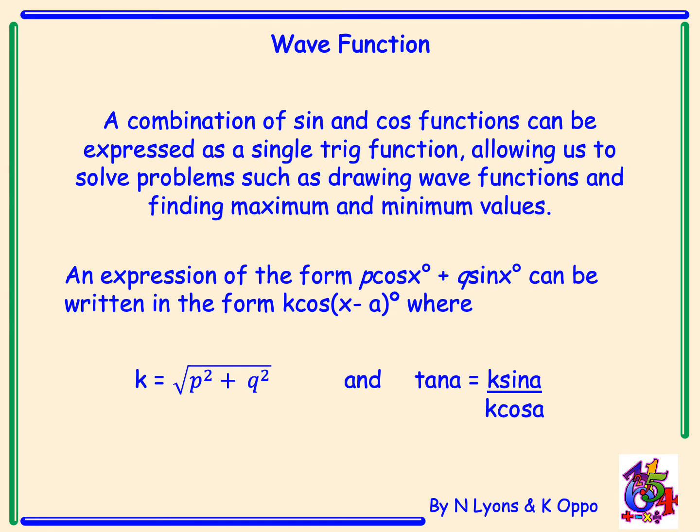An expression of the form p cos x plus q sin x can be written in the form k cos of x minus a, where we can find k by taking the square root of p squared plus q squared, and we can find the missing angle a by using tan a equal to k sin a over k cos a.